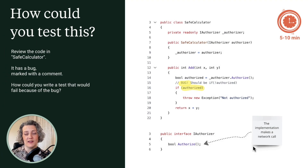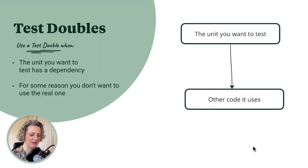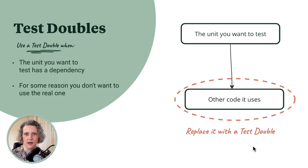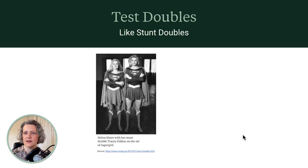I don't know what you've been discussing, but I imagine you've noticed there's a problem here with the authorizer. We need to test this logic about whether it's authorized, but we can't use the real authorizer class because it's making a network call. What we need here is a test double. A test double is very helpful when the unit you want to test has a dependency but for some reason you don't want to use the real one — like when it's making a network call.